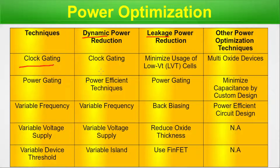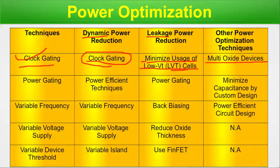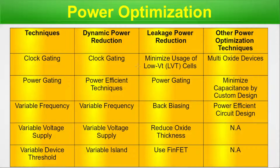For clock gating, the dynamic power reduction comes from the clock gating itself. For leakage power, in this methodology we minimize the usage of low-VT cells (LVT — low threshold voltage standard cells, available in your standard cell library). Other power optimization comes from metal oxide devices, that is the EMOS structure. That covers the clock gating entry.